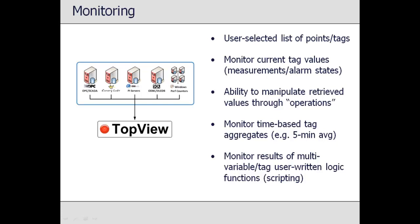Additional processing includes unit conversions, time-based aggregates such as averages, and advanced multivariable expressions and logic that users can develop using Top View's built-in calculation engine. If additional processing is performed on the raw data, Top View then monitors the result of the operation instead of the raw measurement data.